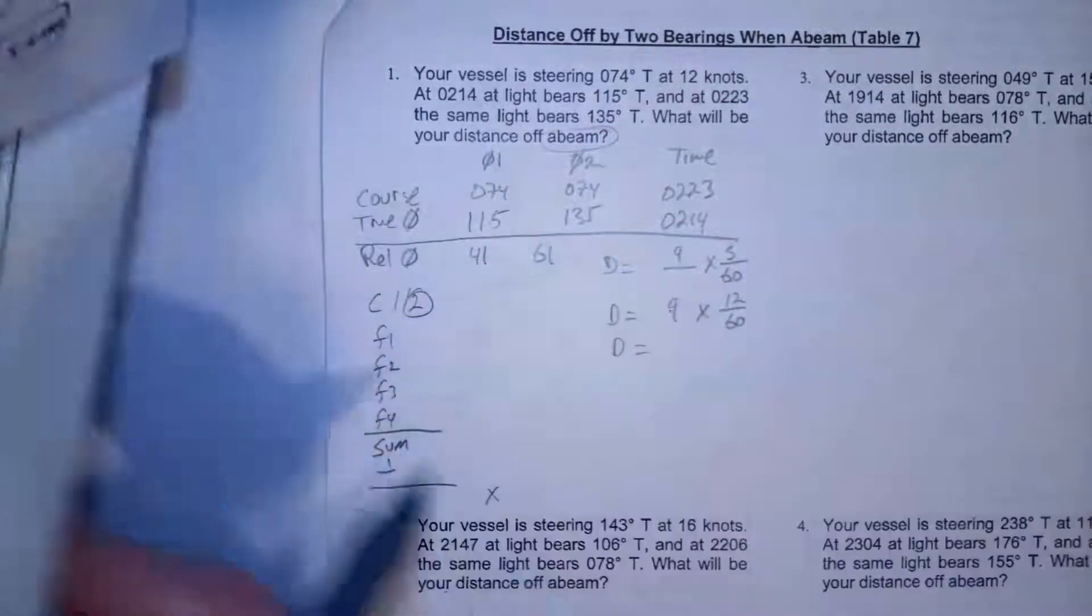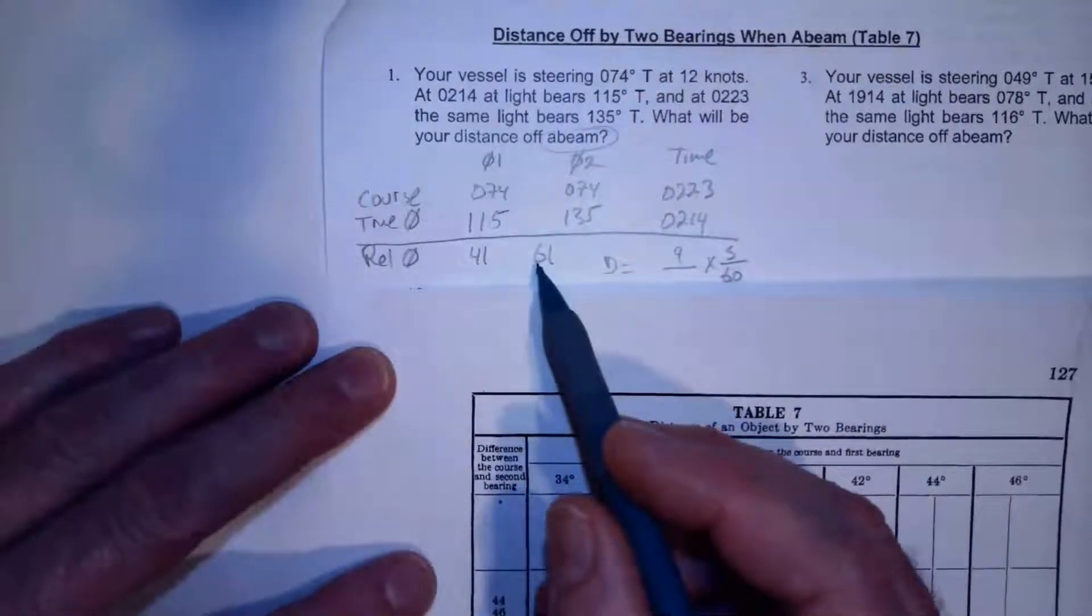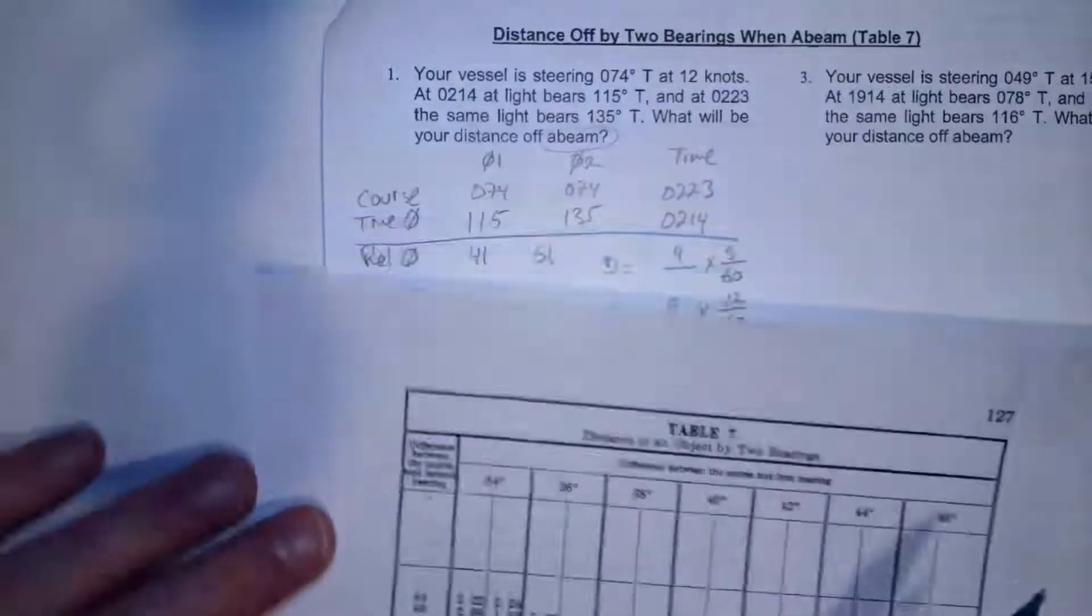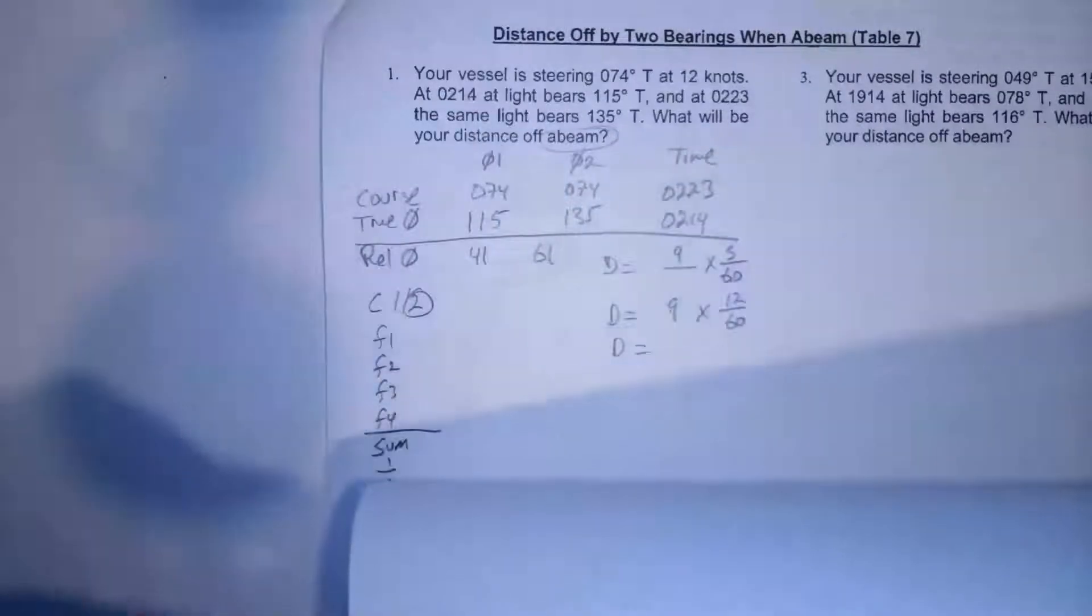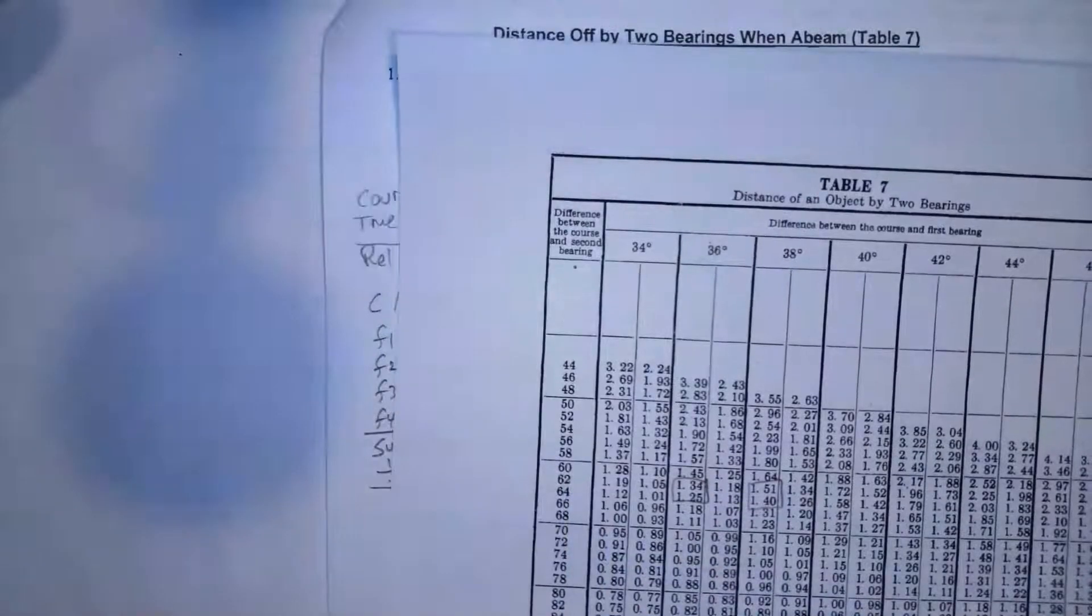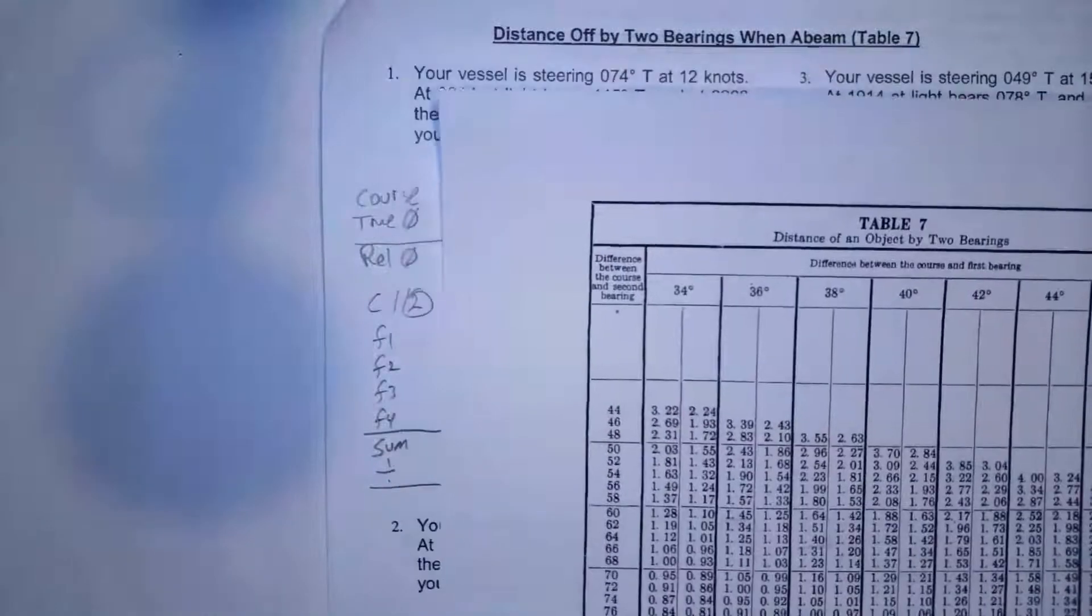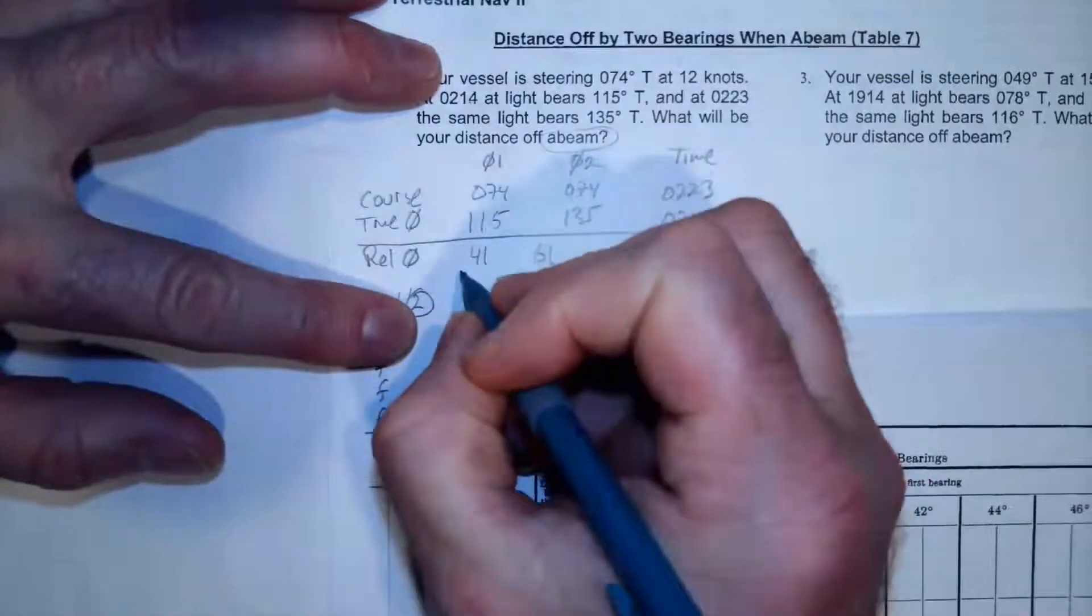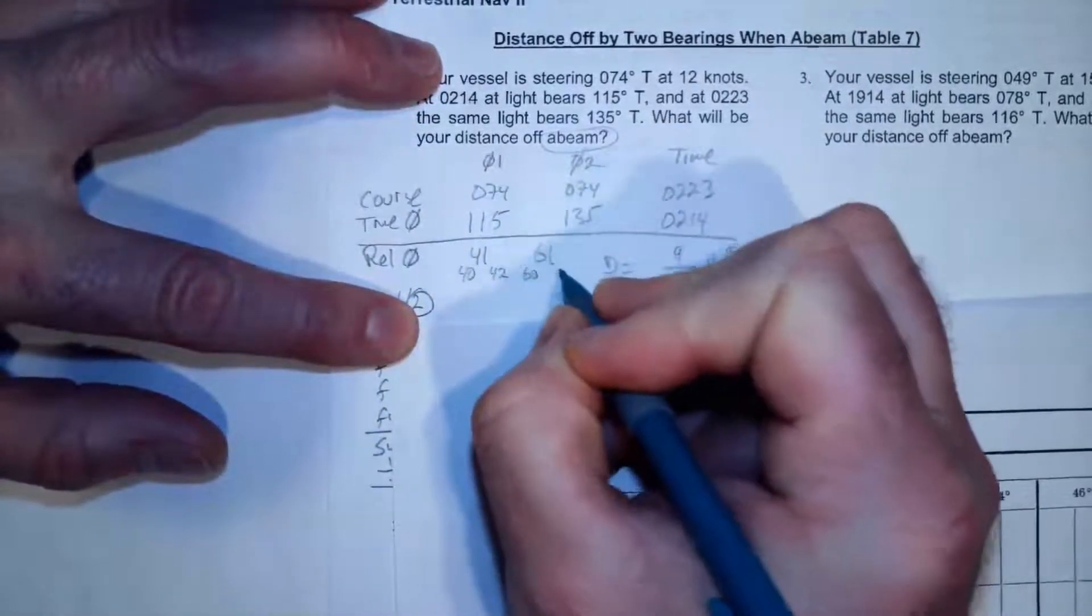I look at this. I'm going to be going to Table 7 next, and I'm going to be looking for 41, 61. So I go here and I look, well, there's a 40, there's a 42, there's no 41. So I'm going to have to interpolate between those two. And there's a 60 and a 62, but no 61. So I'm going to have to interpolate there too. So I'm going to have to interpolate and get four factors out of there.